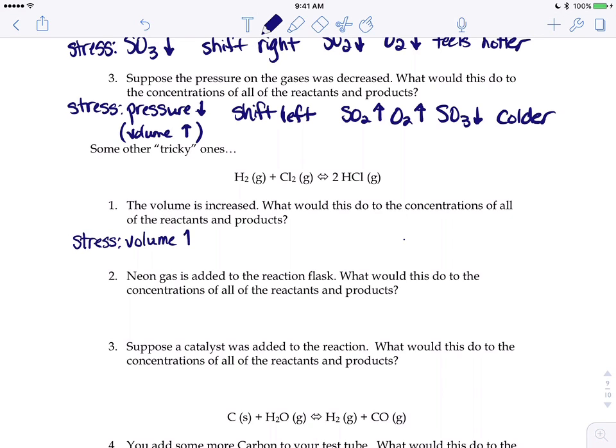Well if you give it more space it would normally shift to the side where there's more gas molecules, right? Take advantage of that extra space. But if you count the number of gas molecules on the left and on the right, they're exactly the same. There's no benefit to shifting left or shifting right. So if you increase the volume, nothing happens.